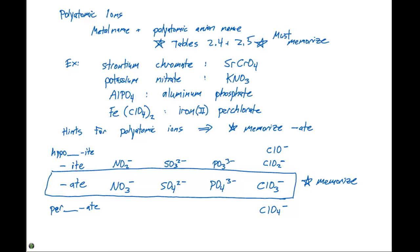then chlorate, which is ClO3 minus, then chlorite, which is ClO2 minus, then hypochlorite, which is ClO minus.